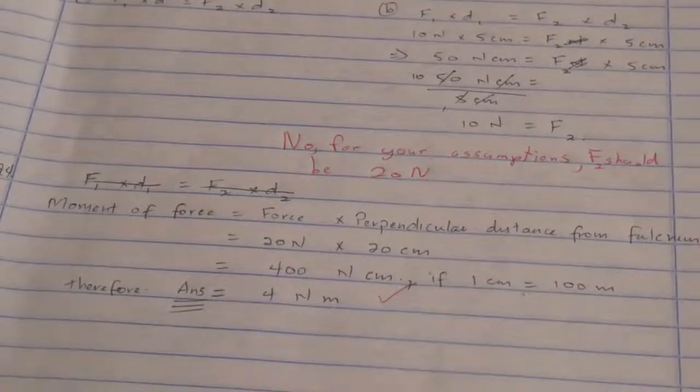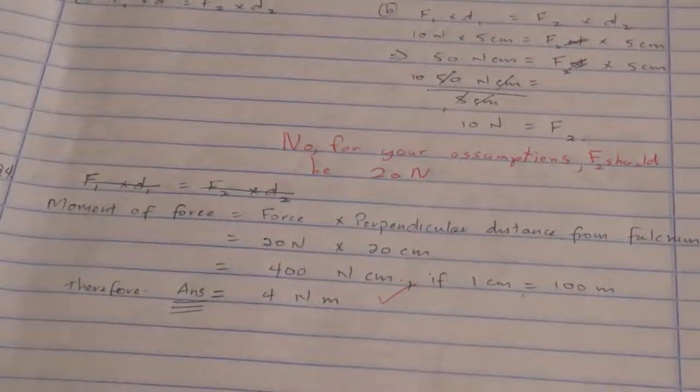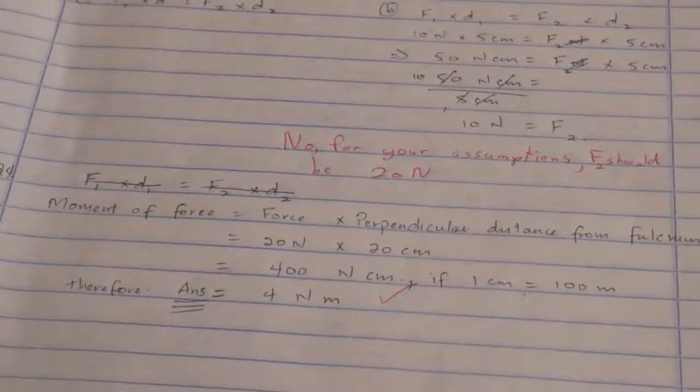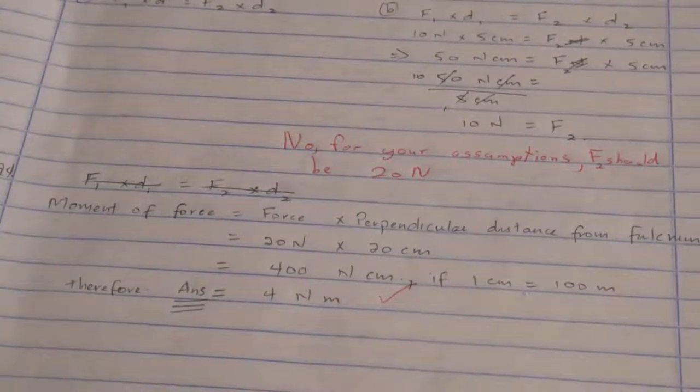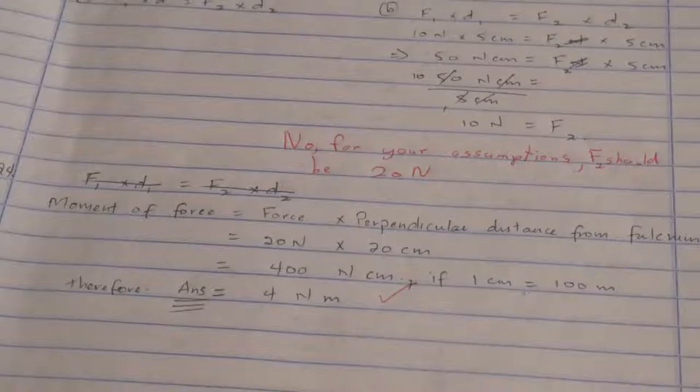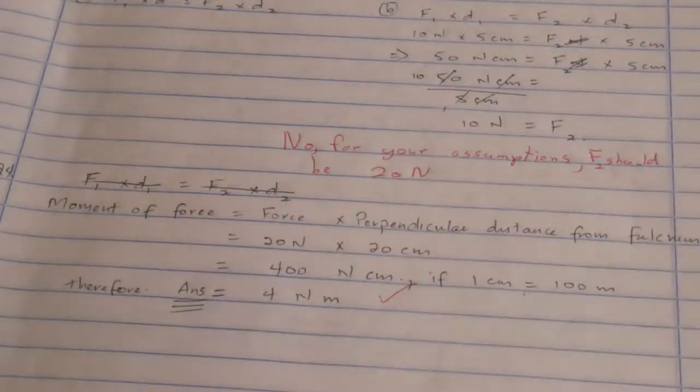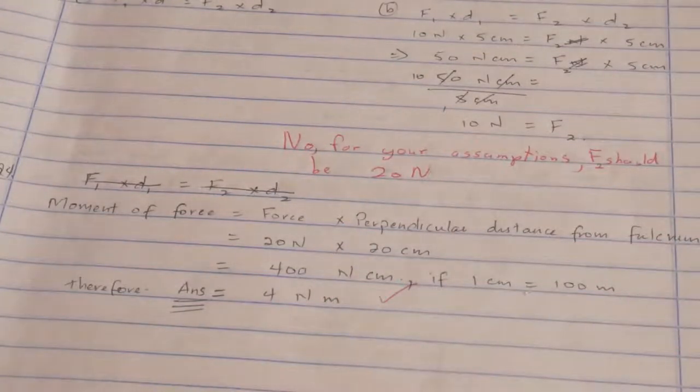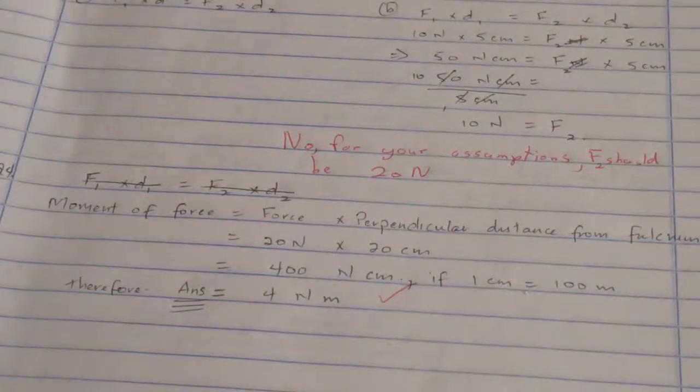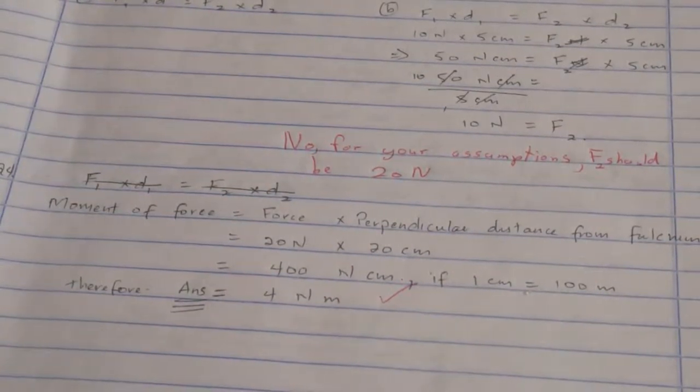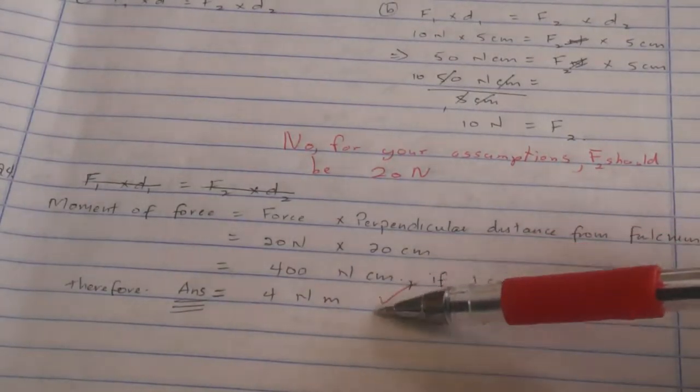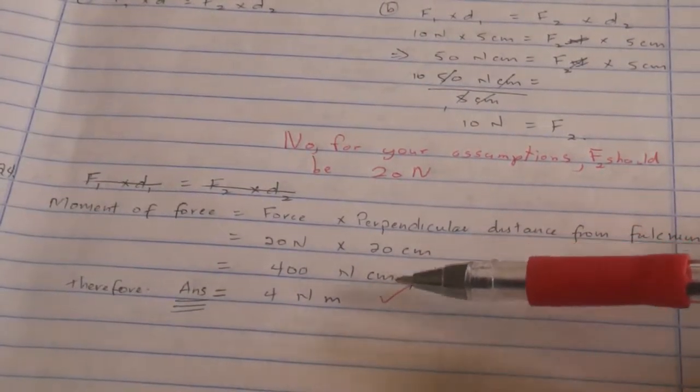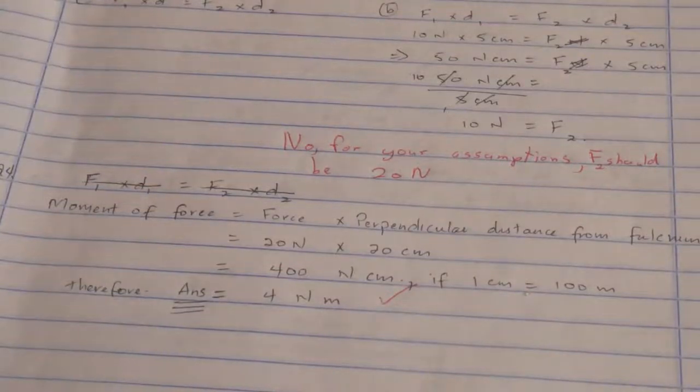Okay, number four. A force of 20 newtons acts at a distance of 20 cm from a pivot. What is the moment of the force above the pivot? Include the unit in your answer. Well, the moment of force is equal to the force times perpendicular distance from the fulcrum, which is 20 cm times 20 newtons, which is 400 newton centimeters.